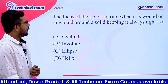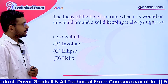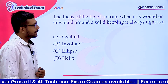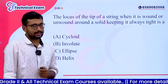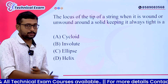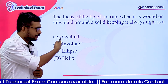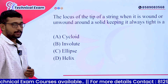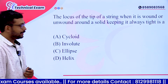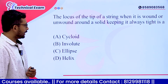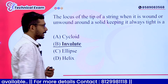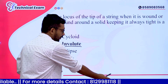The locus of the tip of a string when it is wound or unwound around a solid, keeping it always tight — options: A. Cycloid, B. Involute, C. Ellipse, D. Helix. The answer is Option B, Involute. This is engineering drawing.